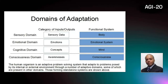Defining a domain as a set of functions that act on a single class of inputs and outputs, we can then identify a set of domains that the functions of the human system are divided into. One domain is the body, with its sensory inputs and outputs.